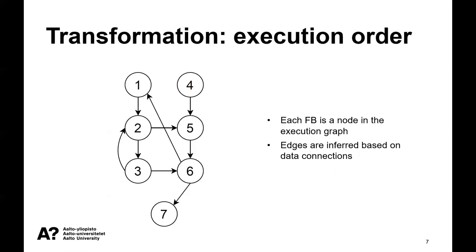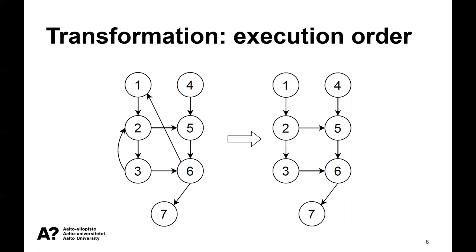But there are many systems that are already implemented in the IEC 61131 standard or just function block diagrams, and we need to transform them somehow to IEC 61499. How do we do this? We determine the topological ordering. We build this execution graph where nodes are function blocks and edges are inferred based on data connections.